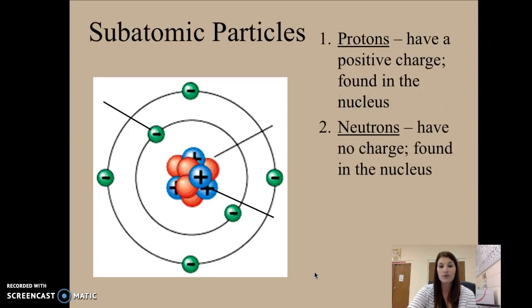A neutron has no charge. Neutrons are neutral or no charge, like zero. They are also found in the nucleus or in the center of an atom. So protons positive, neutrons, no charge, zero.